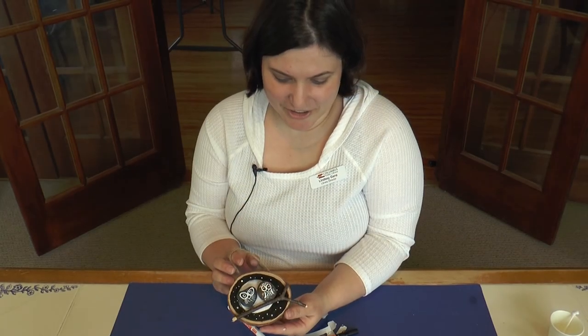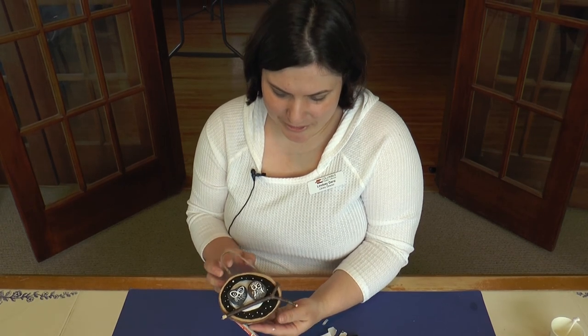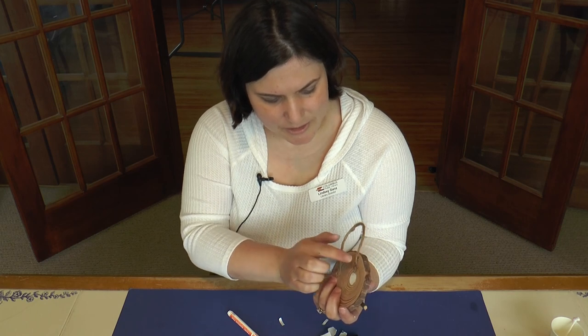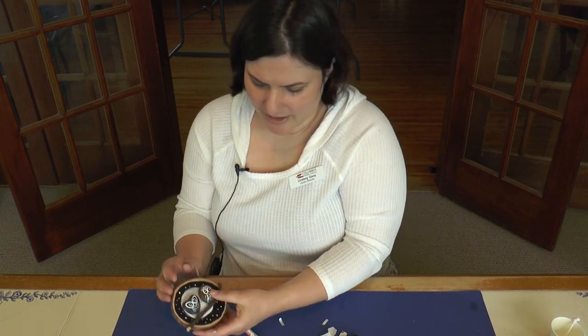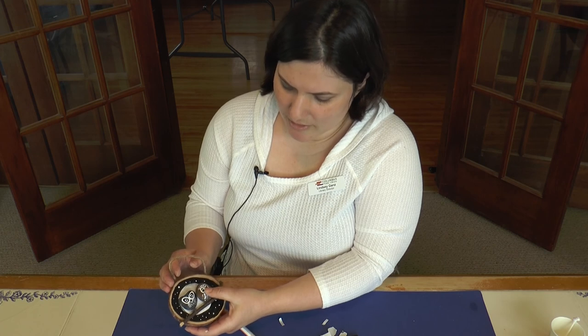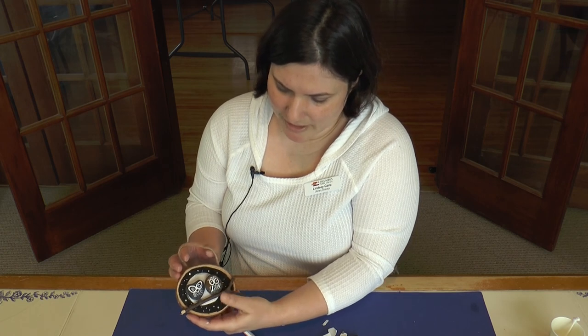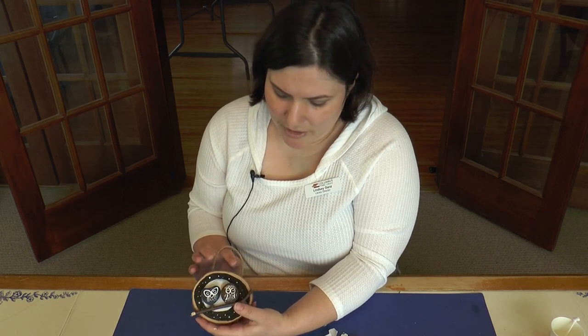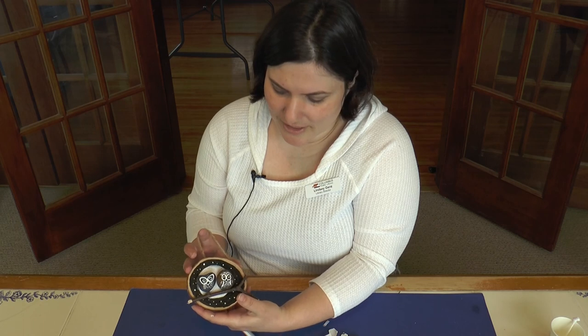So I just finished securing the owls and the branch to the wood slice and as you can see I just put the twine in the back like so and I think the paint was just a little bit wet so my owls aren't sticking quite as well as they would so just make sure that your paint is nice and dry before you try to put your owls onto your wood slice.